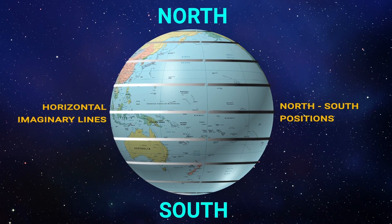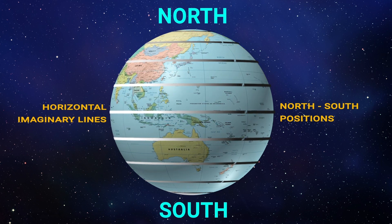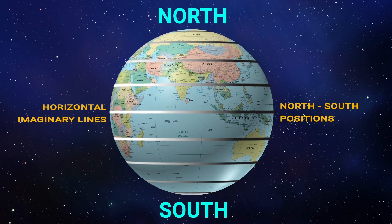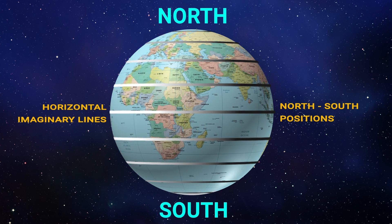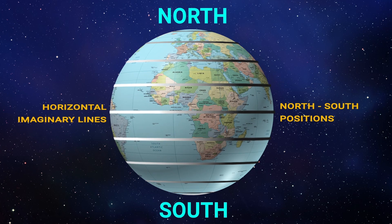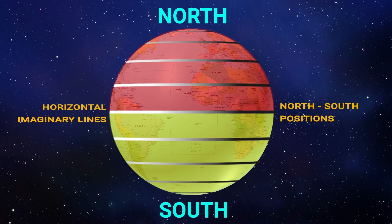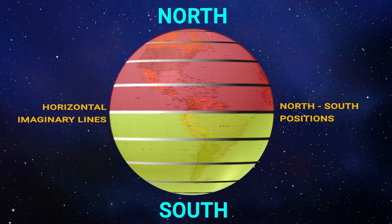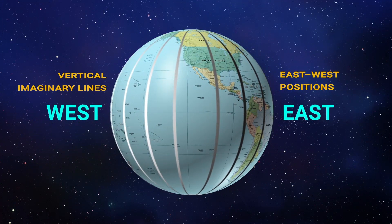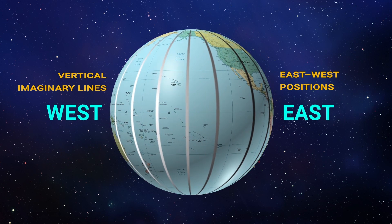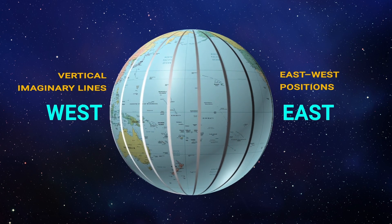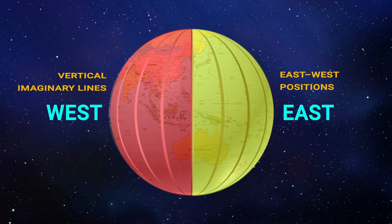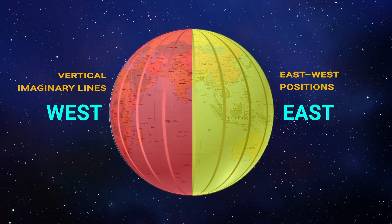First, we have to know what latitude is. Latitudes are the invisible horizontal lines that run around the earth. Latitude is a geographic coordinate that specifies the north-south position of a point on the earth's surface. Longitudes are vertical imaginary lines running from pole to pole, and longitude is a geographic coordinate that specifies the east-west position of a point on the earth's surface.